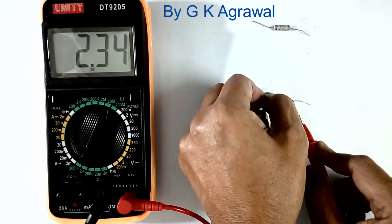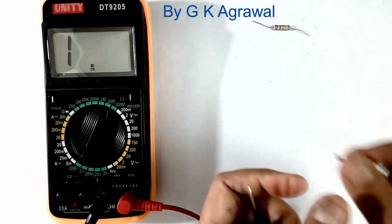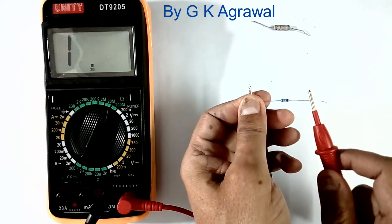Whatever, 2.34 mega ohms is coming. Now you know the problem with the high value resistor. Body resistance is the problem. Body should not touch, one side you can touch, other side you cannot touch.